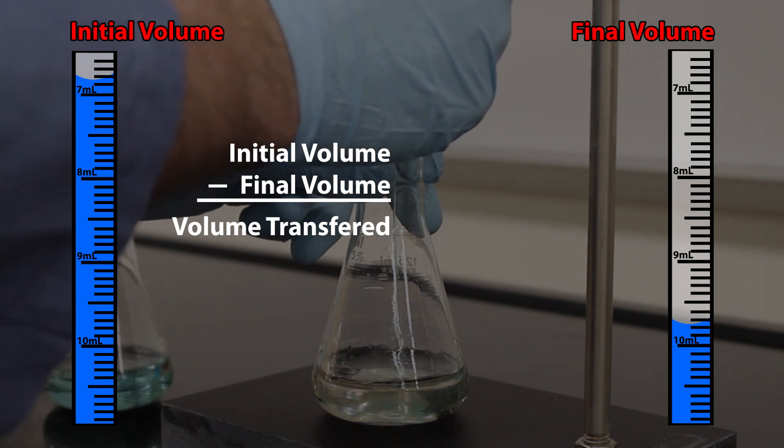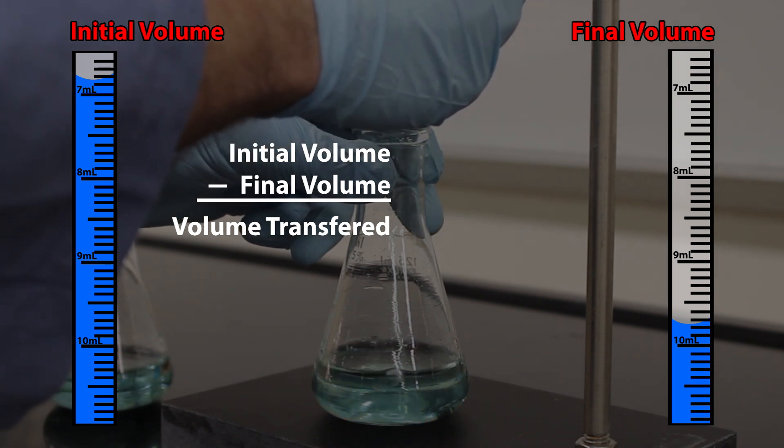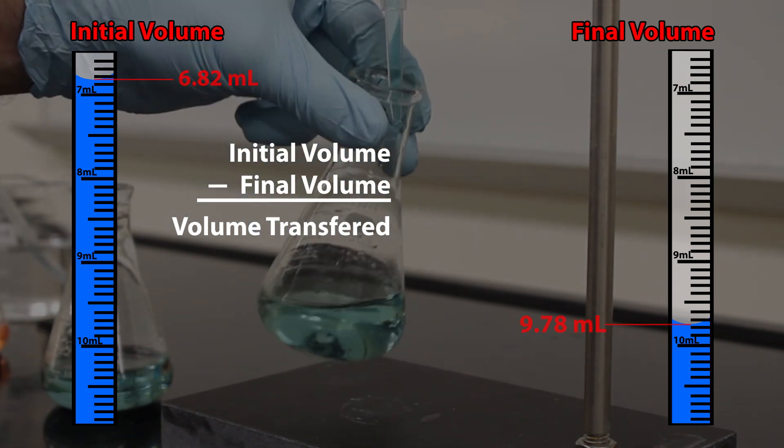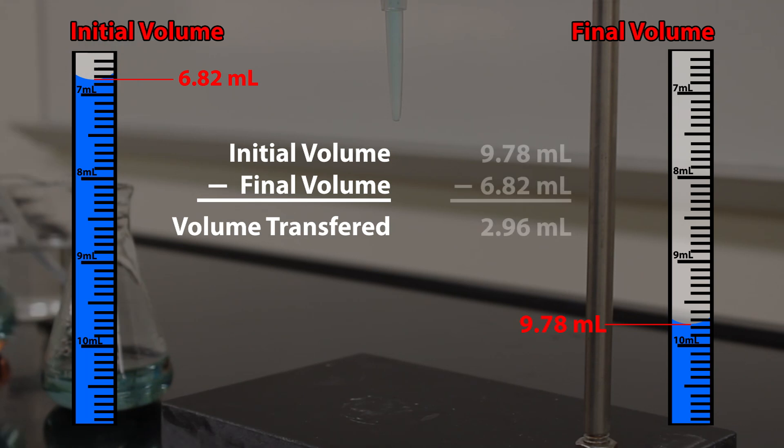Just remember to use the correct number of significant figures. Since there are graduated lines for every tenth of a milliliter we are going to record to the nearest one hundredth of a milliliter for the correct number of significant figures.